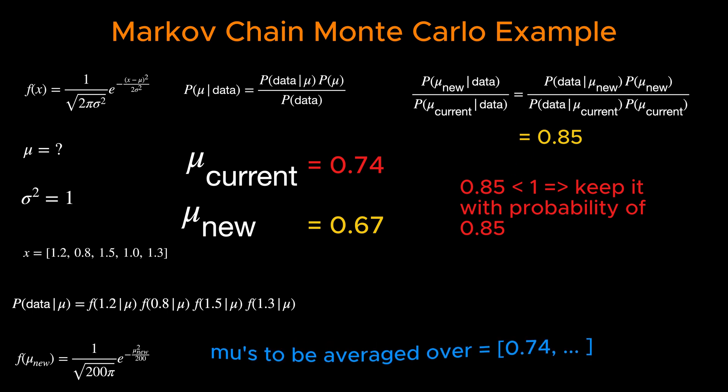This can be done by generating a random number between 0 and 1 from a uniform distribution. The new μ will be added to our container only if the generated random number is less than the acceptance ratio.